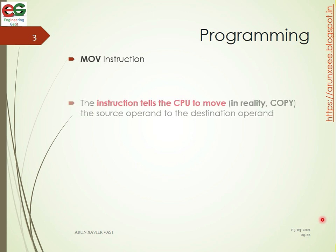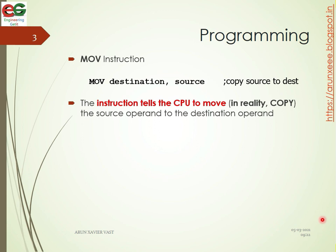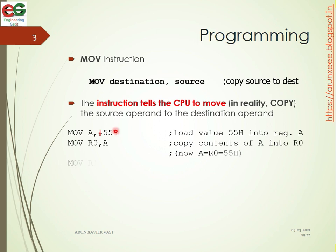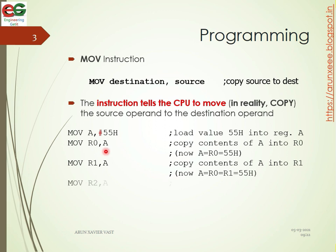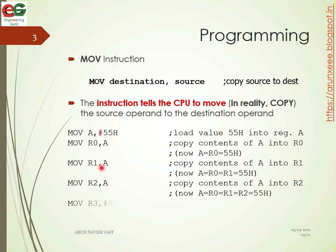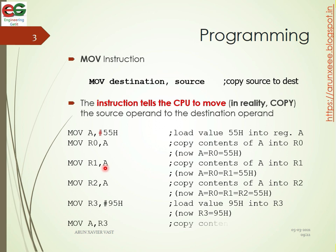Let's start with an example of the MOV instruction. The format is: MOV destination, source. For example, MOV A, #55H — this loads the value 55H into the accumulator. Then MOV R0, A loads the value from the accumulator into R0. Similarly, the accumulator value can be loaded into R1.